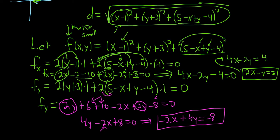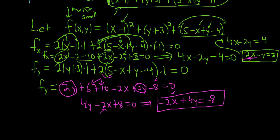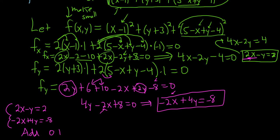Now we solve the system: 2x minus y equals 2, and negative 2x plus 4y equals negative 8. Adding these equations gives 3y equals negative 6, so y equals negative 2.